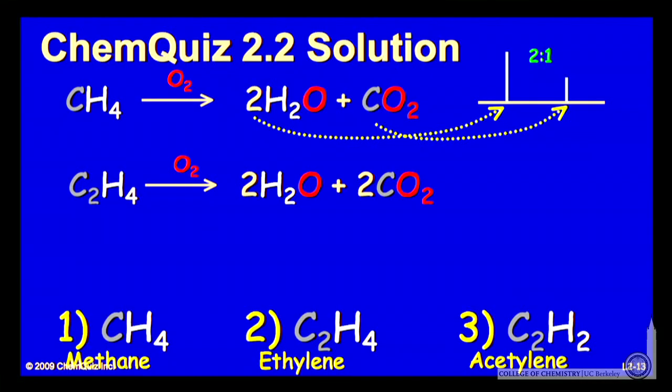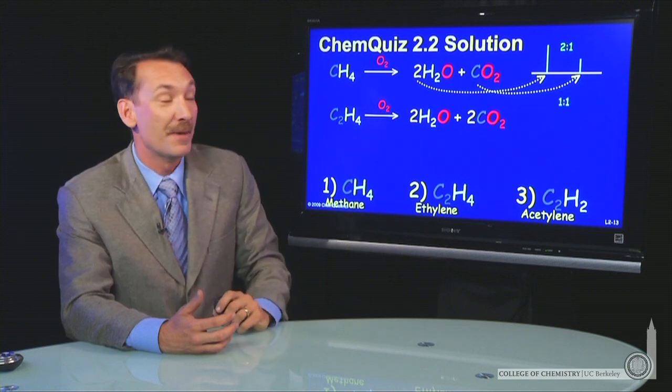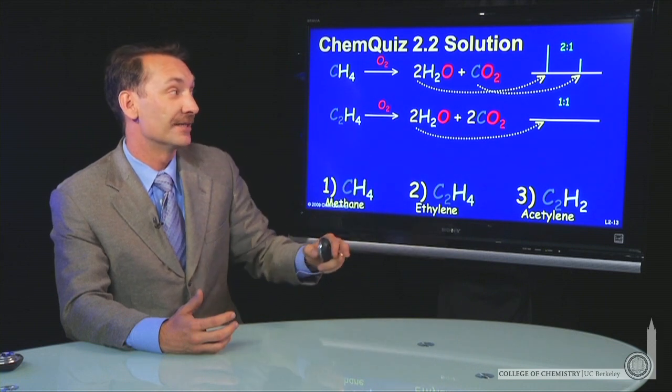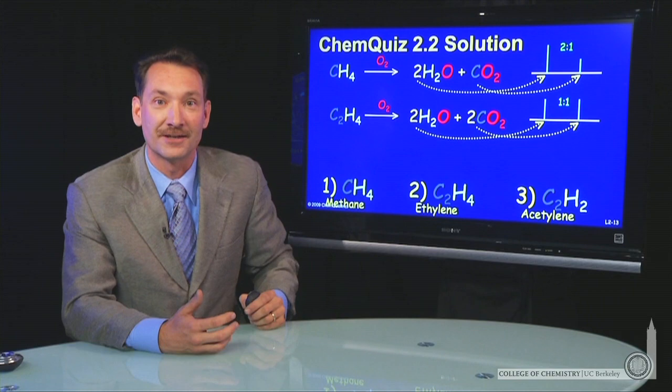If we look at the ethylene, again, balance the chemical reaction, we find equal amounts of carbon dioxide and water are formed. So the mass spectrum of the products would show a 1 to 1 peak height at 18 and 44 from the carbon dioxide and the water.